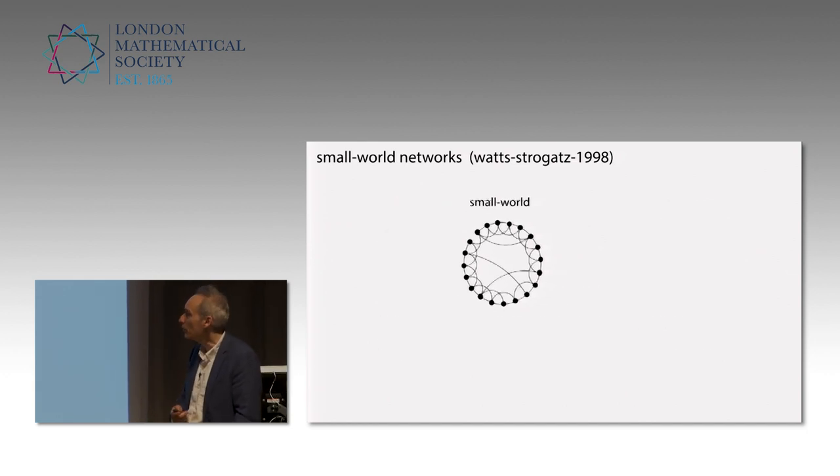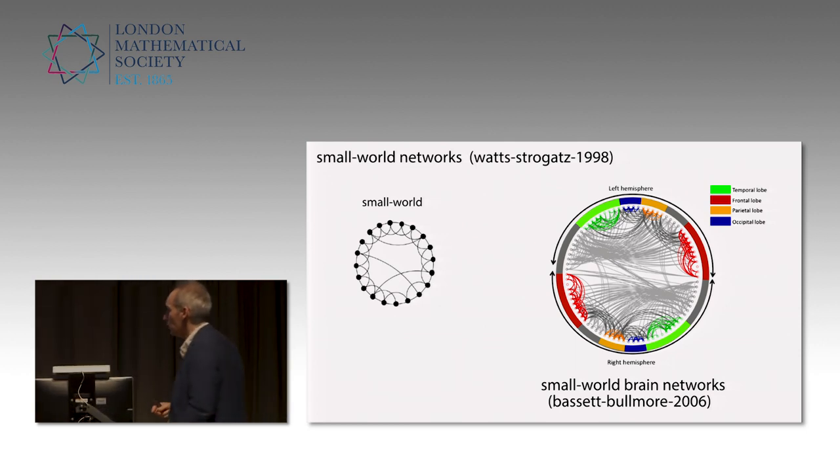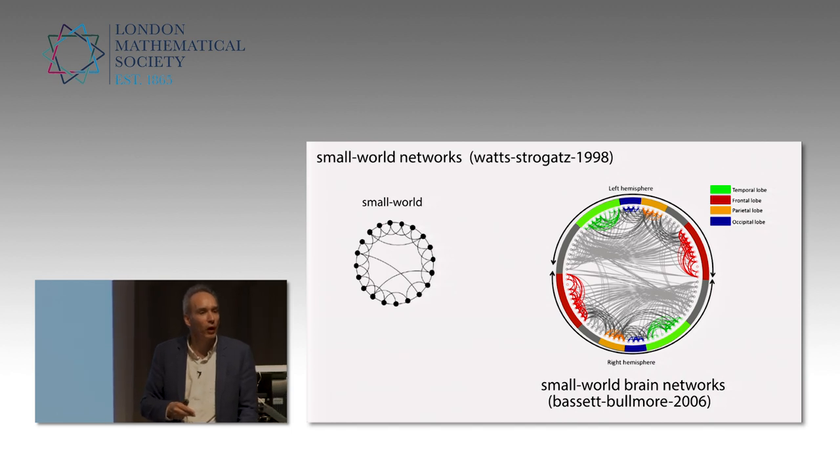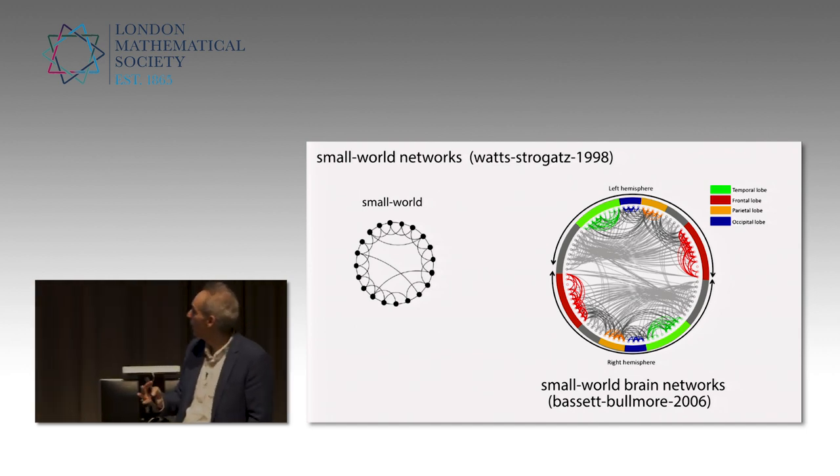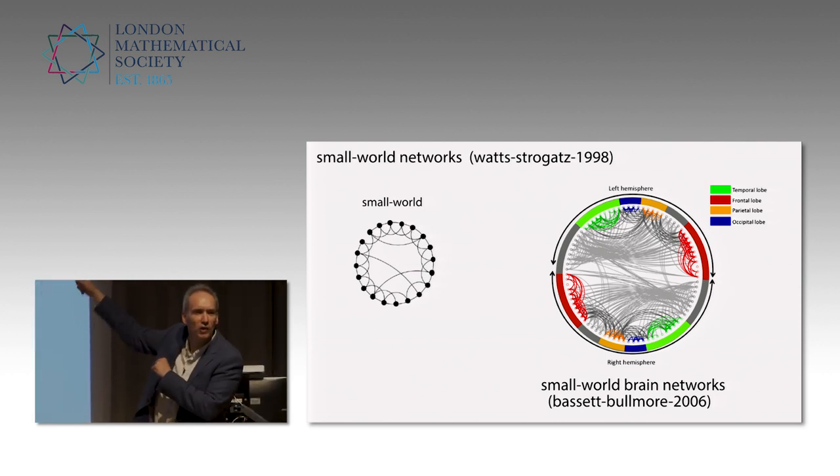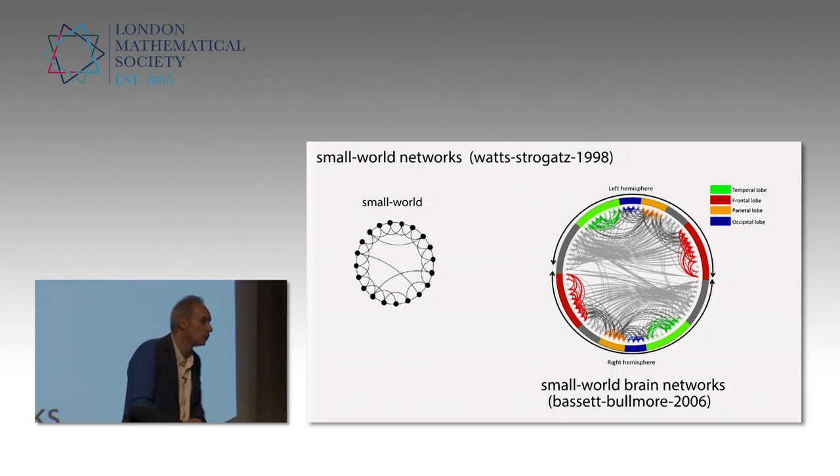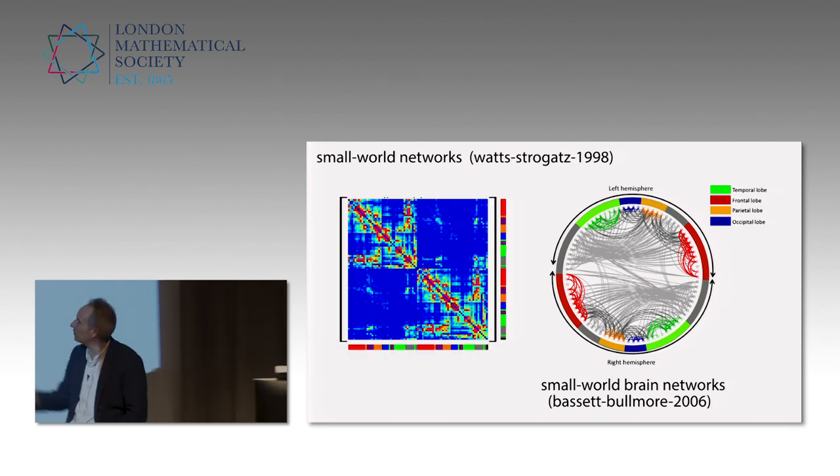That idea was revolutionary for networks in general, started a new field, but it went much farther. A little later, Danny Bassett and Ed Bullmore, Danny Bassett at Pennsylvania, Ed Bullmore in Cambridge, they realized that this structure also applies to the brain. That was yet another revolution in neuroscience. Since then, for the last 13 years or so, everybody in neuroscience, or a lot of people, use network ideas to understand function. What you see here is the same network I showed you, just put in a circle plot. What you see is very tight connections with a few random connections. This is the same graph. I just reorganized the nodes between left hemisphere and right hemisphere and colored them by lobe. That changed. Complete game changer. The realization that the brain is a small world network.